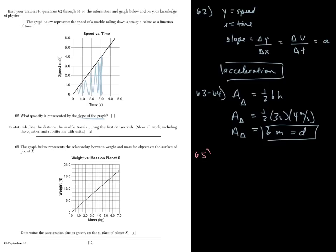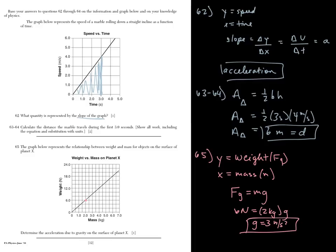And then 65, determine the acceleration due to gravity on the surface of planet X. If you notice here, on our Y axis we have the weight, which is F of G. And on the X, we have mass, which is M. F G equals M times G. You don't have to show work here. But G, you just take your Y divided by X, find the slope. You can find two points or just take one point here, assuming this is just a straight line. Let's take this one right here as an example. You'll get six newtons equals two kilograms. G is equal to three meters per second squared. That's all you need to write.